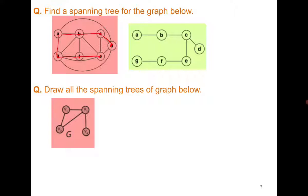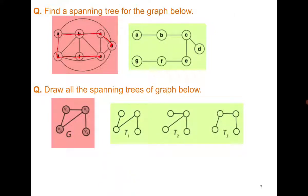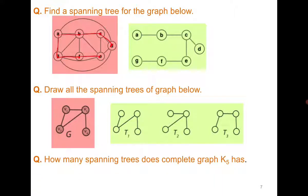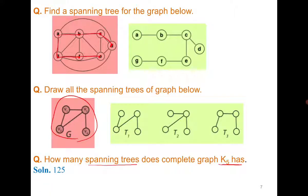Next, draw all the spanning trees of the graph below. Since G is a labeled graph, please try it yourself. You will find that there are three spanning trees for the following graph. Now if I think of K5 with five vertices and many edges and I have to count the number of spanning trees, the number is quite large. When looking for the number of spanning trees, we assume the graph is labeled — labeled K5 has 125 distinct spanning trees.